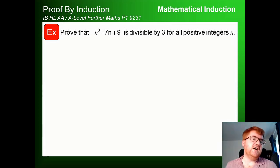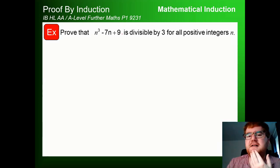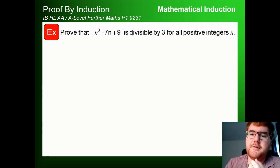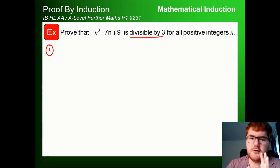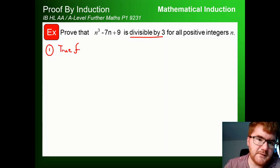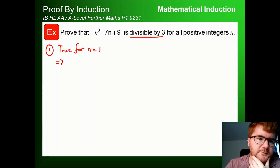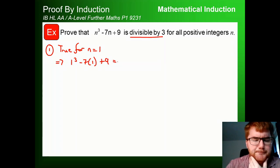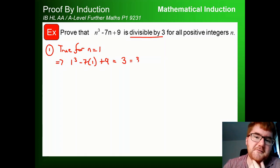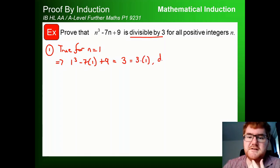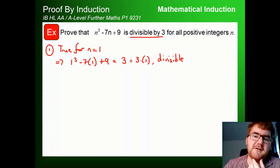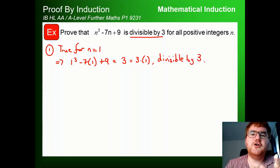On to another style of divisibility question. We have the cubic n³−7n+9 and we want to show it's divisible by 3 for all positive integers n. We go through the same process. For n=1: 1³ − 7(1) + 9 = 1 − 7 + 9 = 3 = 3×1, which is divisible by 3. The base step is always quite relaxing.